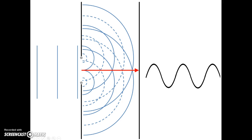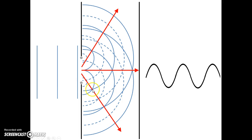The same thing happens along this ray: two crests, two troughs, two crests, two troughs, and it would continue if we let these waves go on. And if you look again, there's another place where we have a line of constructive interference — it's along this ray: two crests, two troughs, two crests, and it would continue.